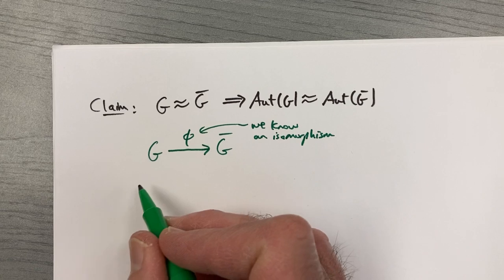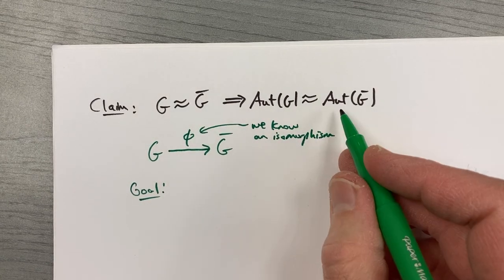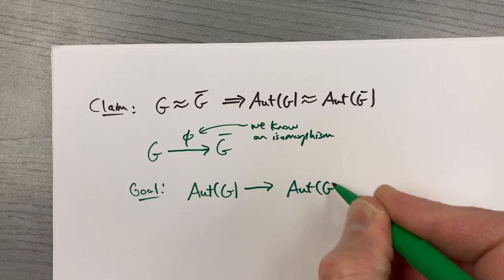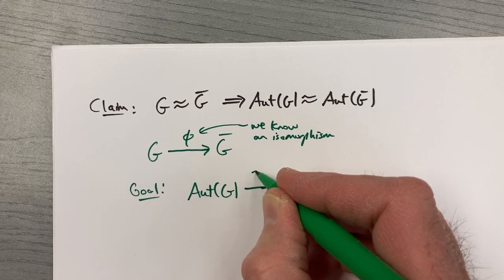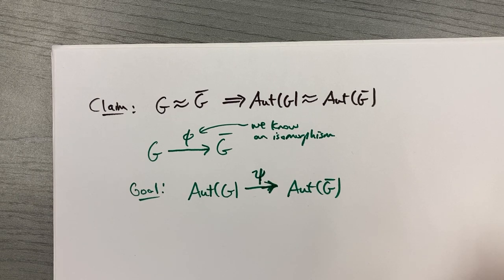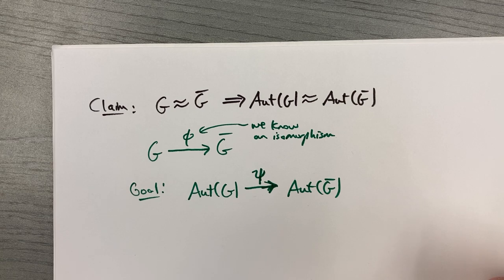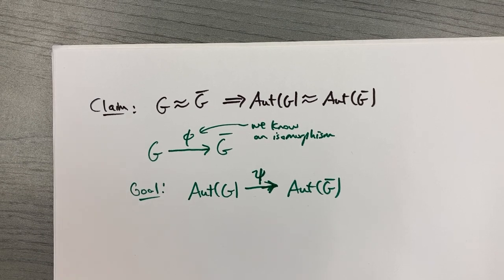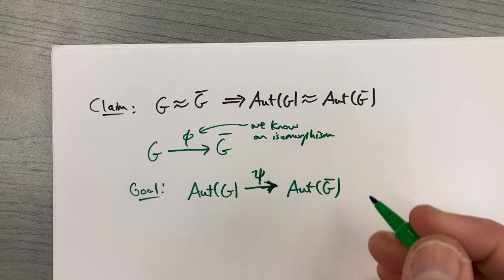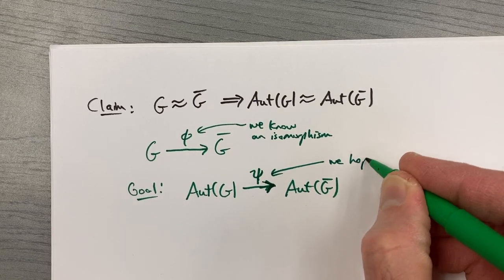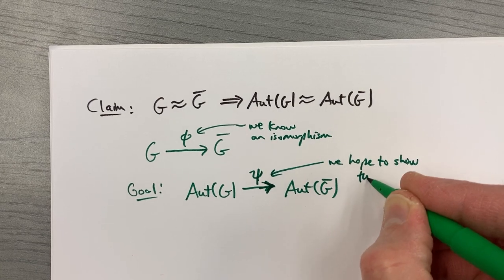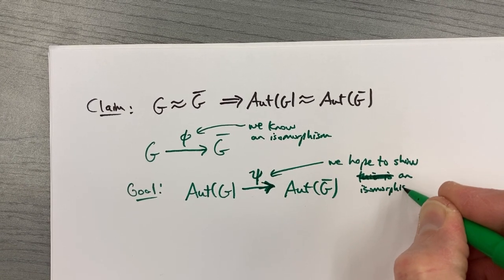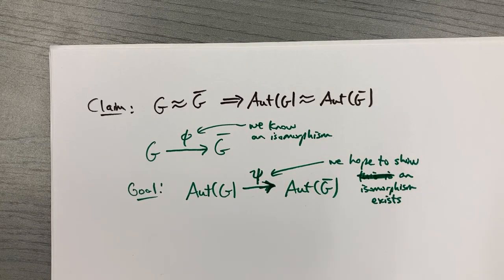What should I call it? How about phi? Since I'm given that G is isomorphic to G-bar, I know, we know, an isomorphism exists. We don't know what it is. We don't know a formula for it. We just know it exists. We know there's a one-to-one and onto function from G to G-bar that's also operation-preserving. And what's our goal? Our goal is to show Aut(G) is isomorphic to Aut(G-bar).